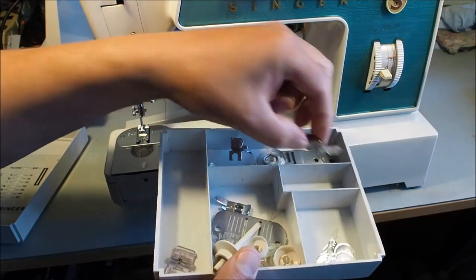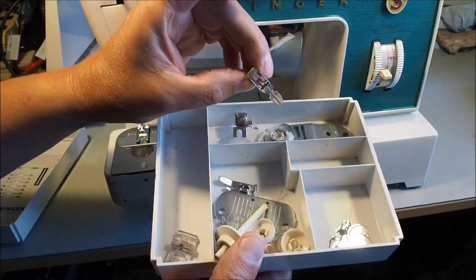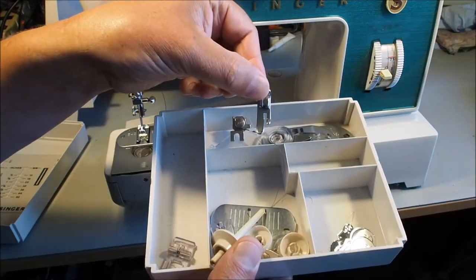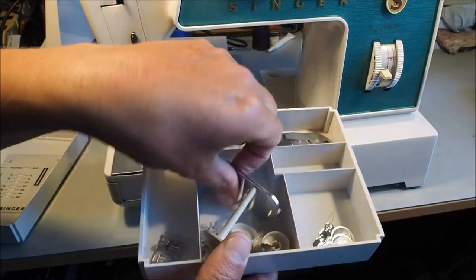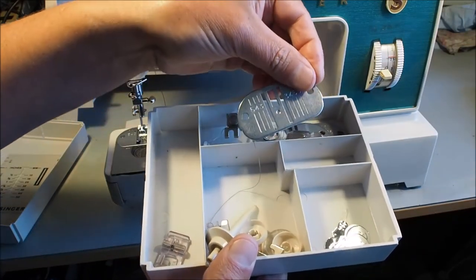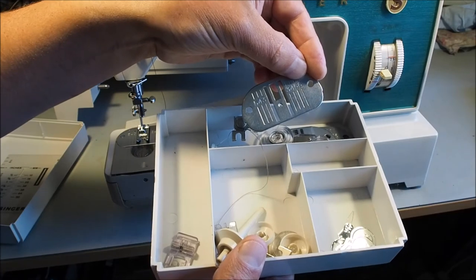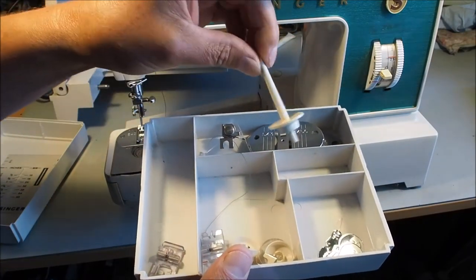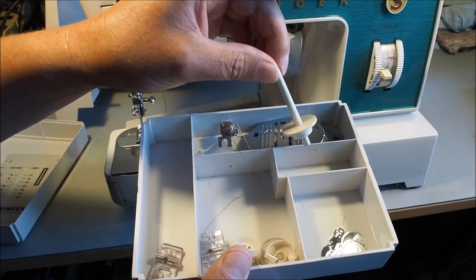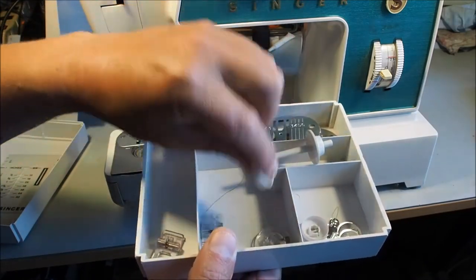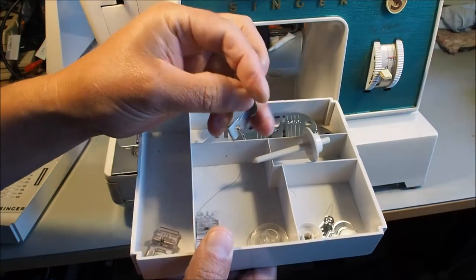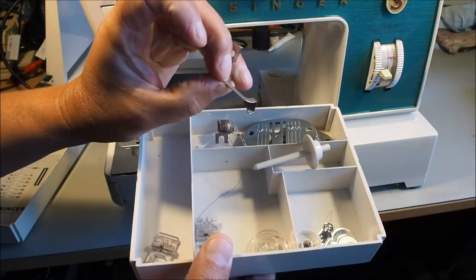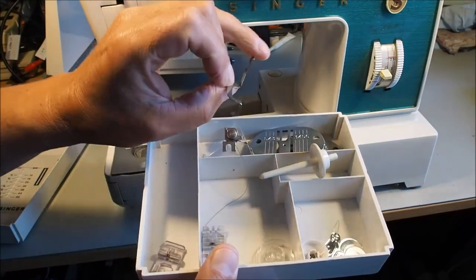There's a spare bobbin, zipper foot, and straight stitching foot which you use with the straight stitching plate. There's a vertical spool holder for twin needling, a couple of spool pin holders, and I think this is for blind hemming.